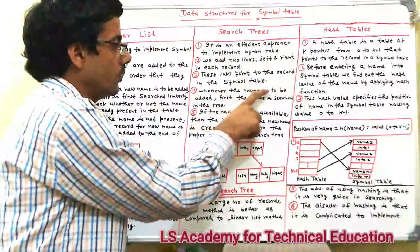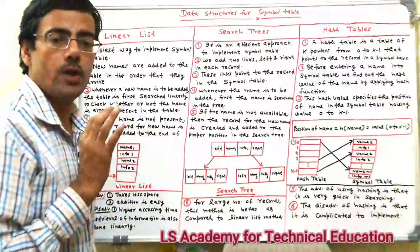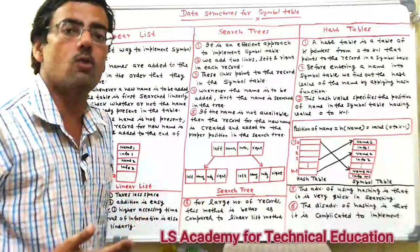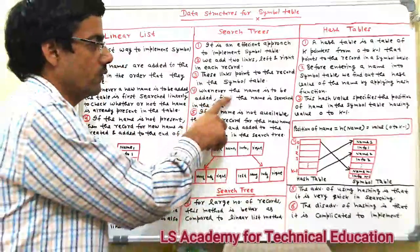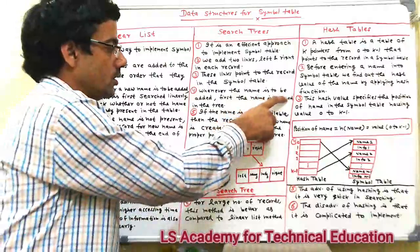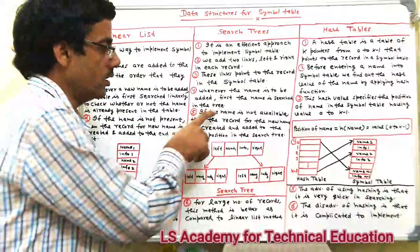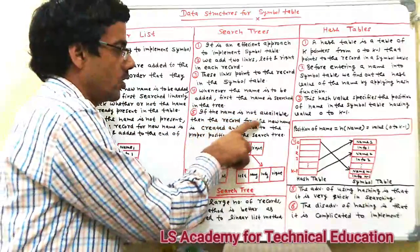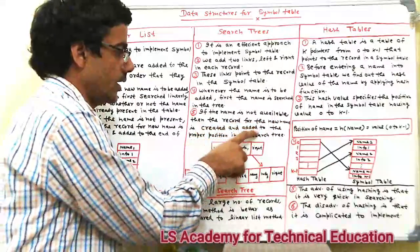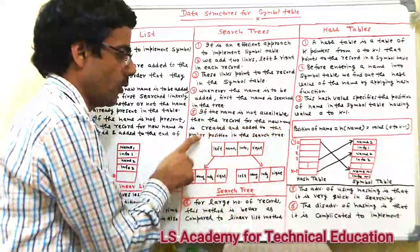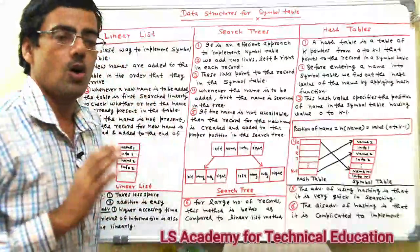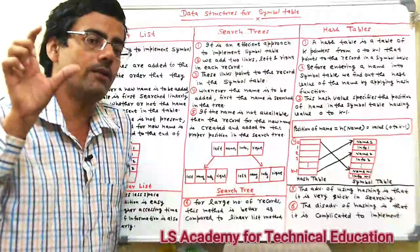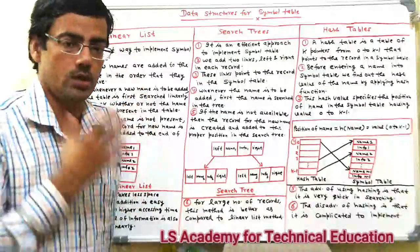Whenever a name is to be added, if we add a new name, it is added to the proper position in the search tree. If the name is not available, the record for the new name is created and added to the proper position in the search tree. If it is already available, it is flagged as a multiple-defined name, just like in the linear list.